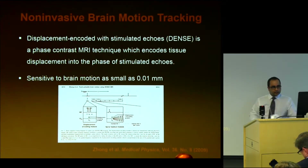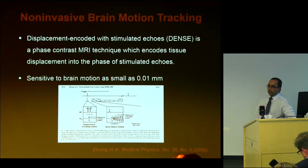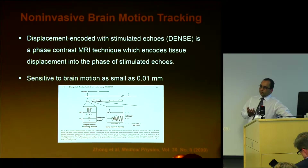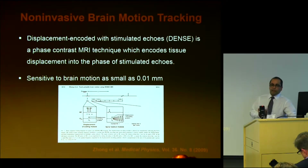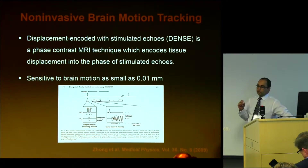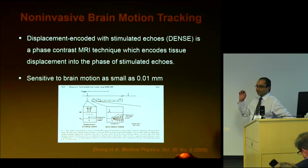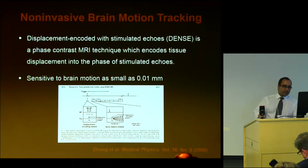The idea behind this study was to use a non-invasive MRI method based on a sequence called DENSE — displacement encoded with simulated echoes MRI. It's similar to a velocity-encoded phase contrast technique used for CSF flow, except it's displacement encoded, and it's very sensitive to even sub-millimeter displacements of brain tissue. I'm not going to get into the gory details of the sequence because I frankly don't understand them — if there are any technical questions, John might be able to help.